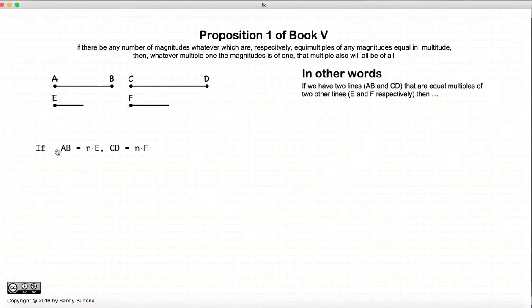So this is the starting position. So if we have that AB is an equal multiple of E as CD is to F, then the sum of AB and CD will be the same multiple of E and F. In other words, AB plus CD will also be n times E plus F.